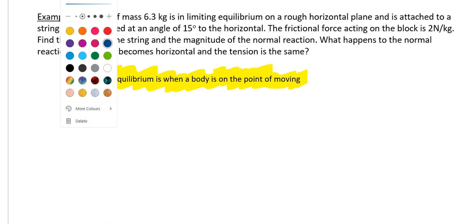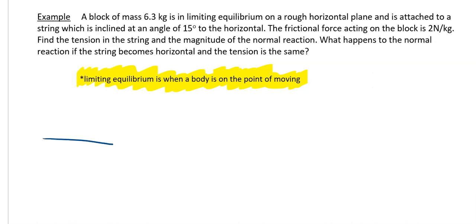We are going to draw our diagram for this question. So draw your horizontal line as best as you can and the mass was 6.3 kg. So you have got your mass of 6.3, so your weight of 6.3g newtons going downwards. You have got your normal reaction R going upwards. You have got your tension in your string T at 15 degrees and the resistance was 2 newtons per kg. So 2 times 6.3 gives you 12.6 newtons, so that is your resistance.